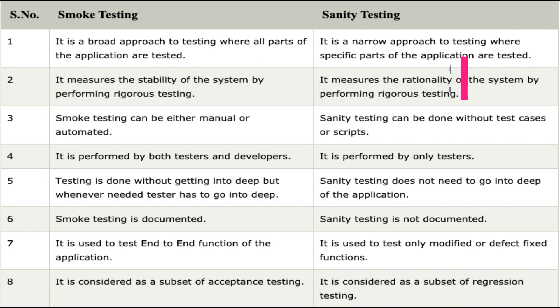Point two: smoke testing measures the stability of the system by performing rigorous testing to check that the system or software is stable. Sanity testing measures the rationality of the system — meaning it checks whether the software is performing as expected or not.